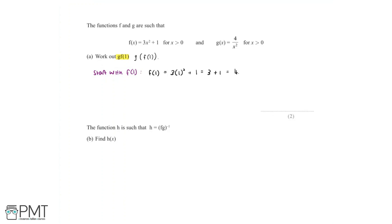Now we need to find g(f(1)), and since f(1) is equal to 4, we're just finding g(4). We know that g(x) is equal to 4 over x squared, so we replace every x with 4. g(4) is equal to 4 over 4 squared, which is 4 over 16. Simplifying this fraction, g(4) is equal to 1 over 4. So we've successfully found that gf(1) is equal to 1 over 4.